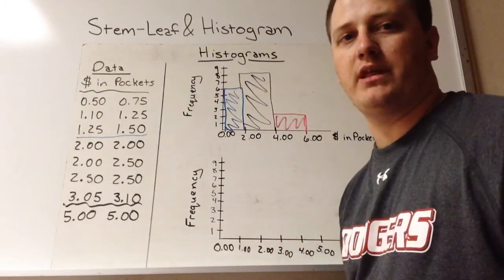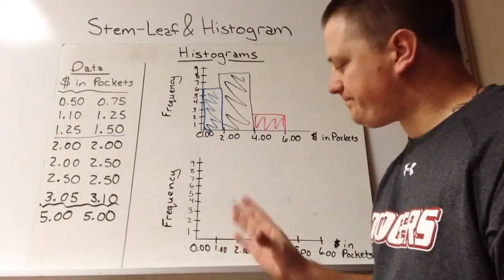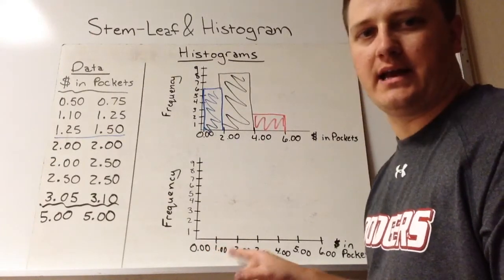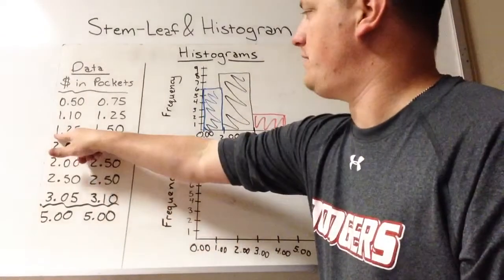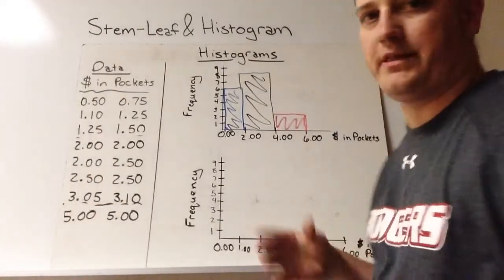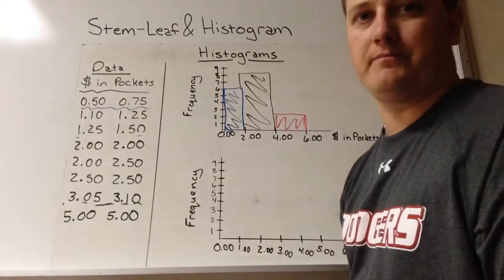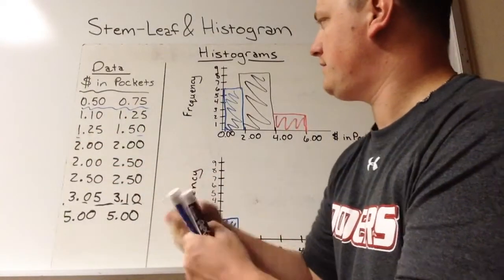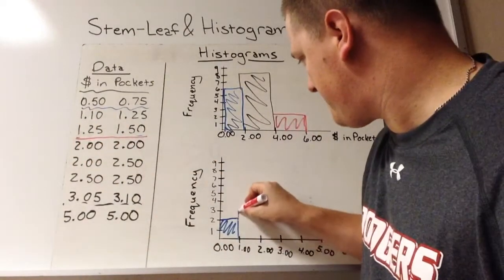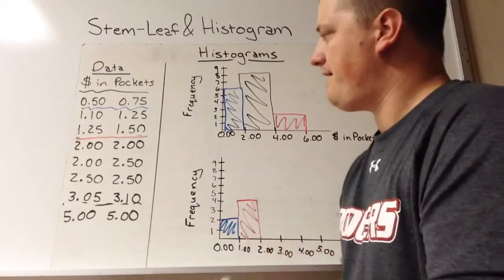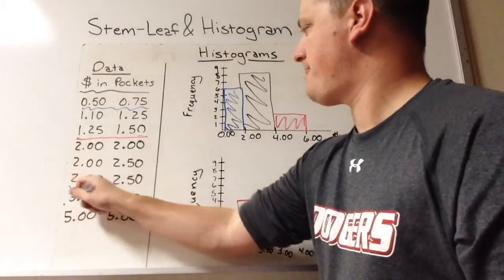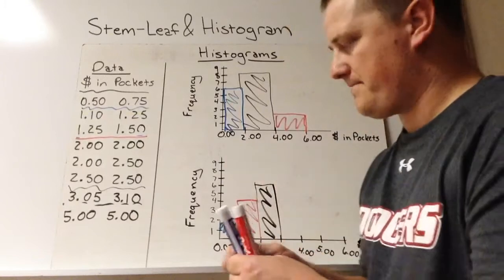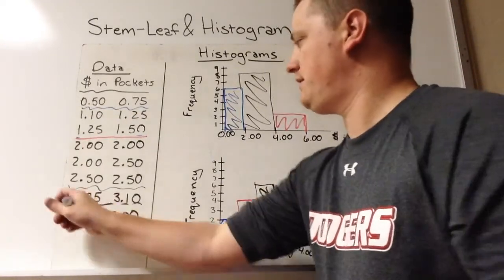The bin size is really important as to how a histogram looks. On the second histogram, I've changed the bin size to one-dollar intervals. So the first bin is zero to ninety-nine cents — there are two values there: fifty cents and seventy-five cents. From a dollar to a dollar ninety-nine, there are four. From two to three dollars, there are six. From three to four dollars, there are two.